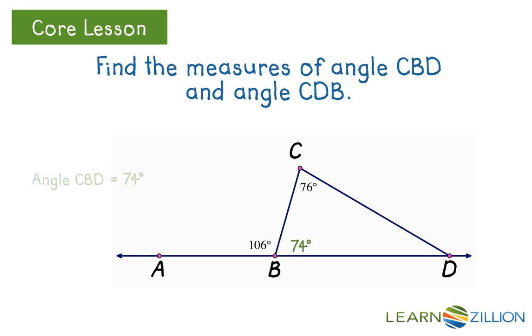Now that we know two of the interior angles, we can find the third angle. Angle CDB must be equal to 180 minus the sum of 76 plus 74, or 30 degrees. The answer to the problem is angle CBD equals 74 degrees and angle CDB equals 30 degrees.